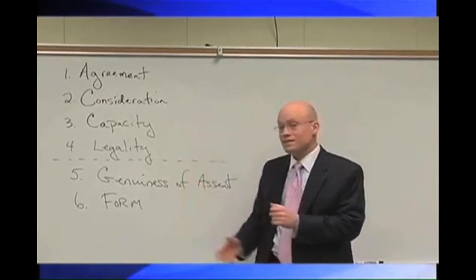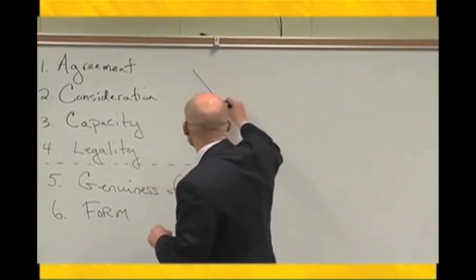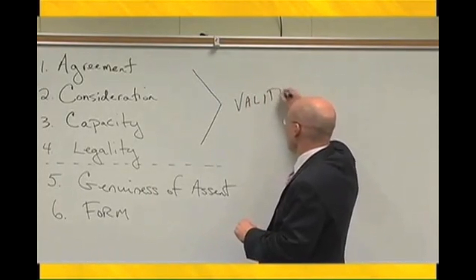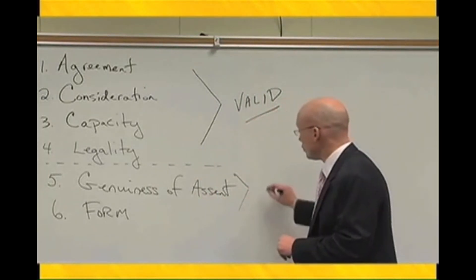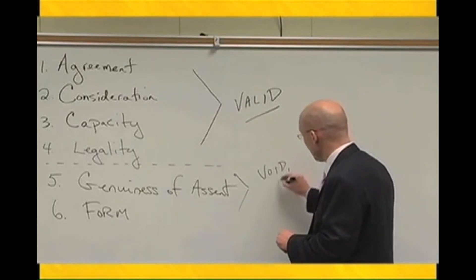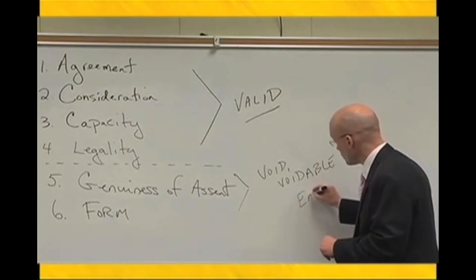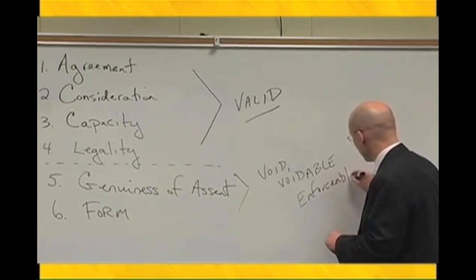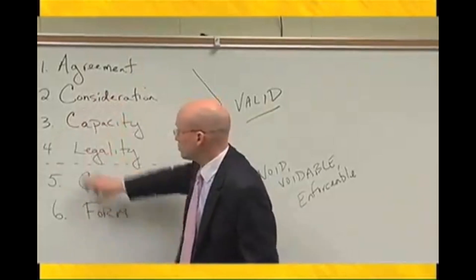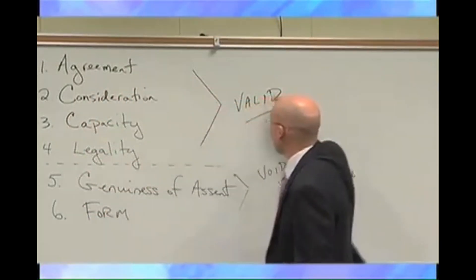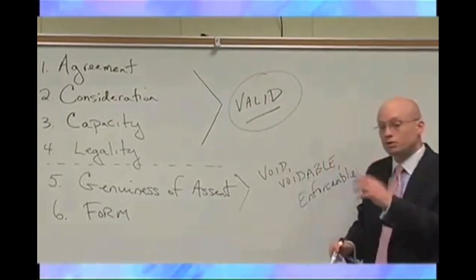As you can see here, we have the six requirements to a contract, four of which relate to whether or not a contract is valid. The remaining two requirements relate to whether a contract is void, voidable, or enforceable. These four elements, which make up the six requirements, we call them elements because they speak to whether or not a contract is valid. And that's what I want to start with first.